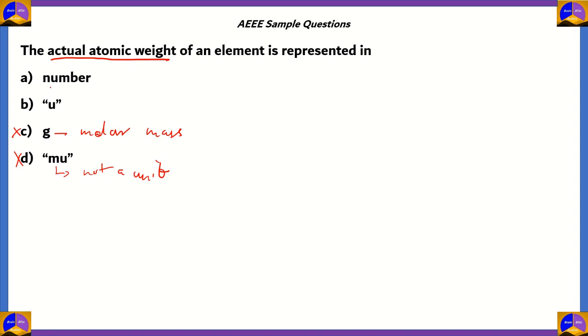What about option A, number? Well, the atomic number is an indication of the number of protons in an atom. Therefore, option A is also incorrect. The correct answer is option B, U. U stands for unified mass, and this was also earlier called AMU, atomic mass unit.